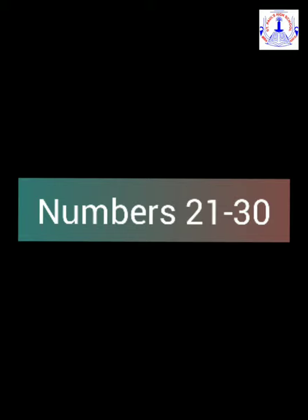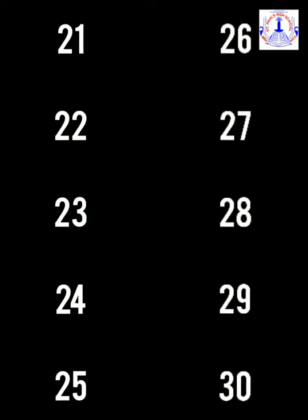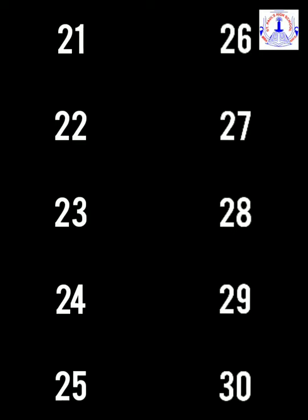So children, let's start counting numbers from 21 to 30: 21, 22, 23, 24, 25, 26. What comes after 26? 27, 28, 29, and after 29, 30. So here we are done with our oral.